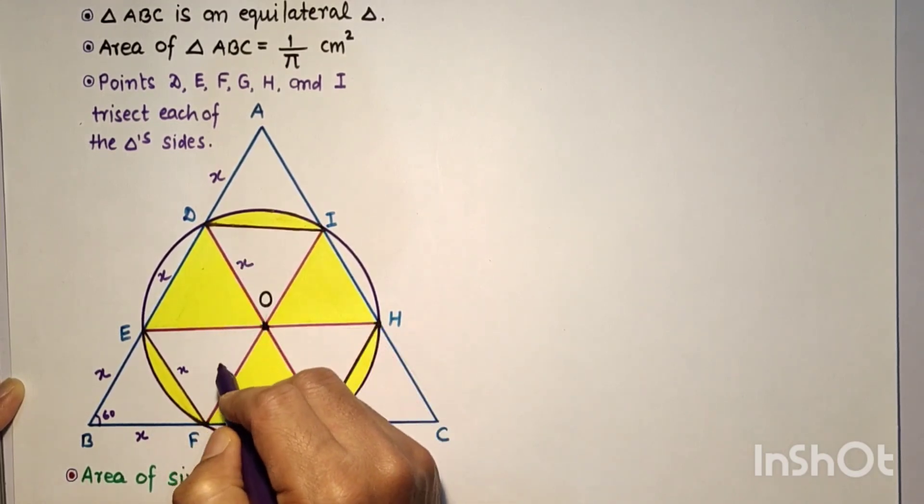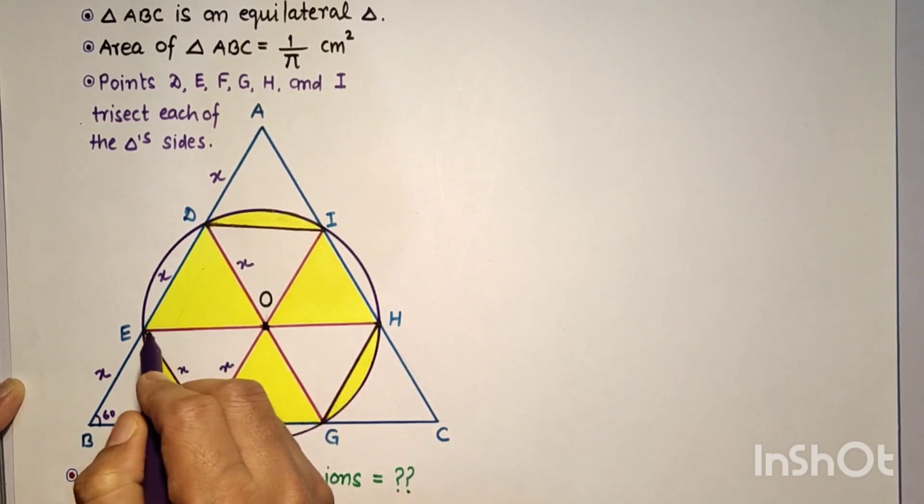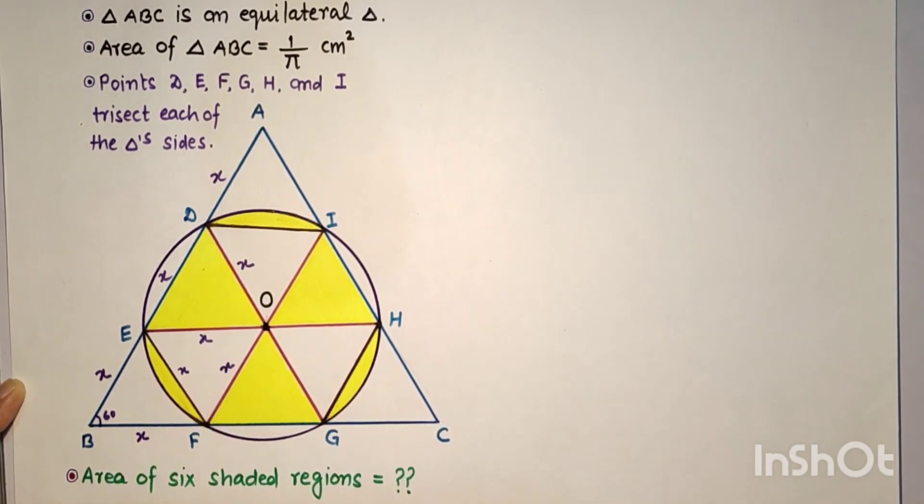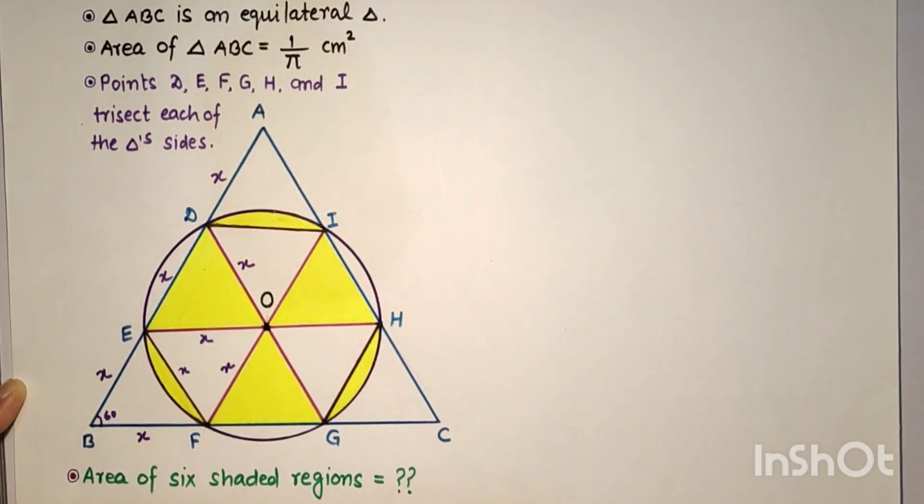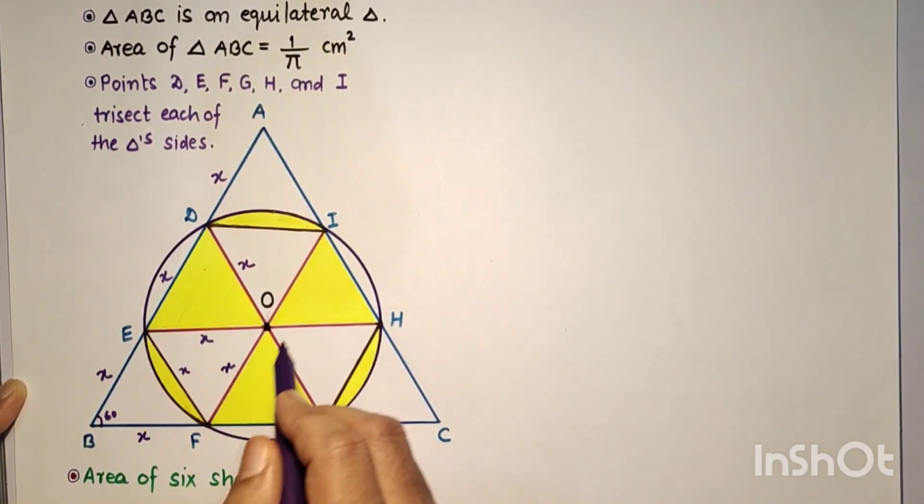So all are X. The diameter of this circle is 2X, and all six triangles are equilateral triangles with each side being X cm.